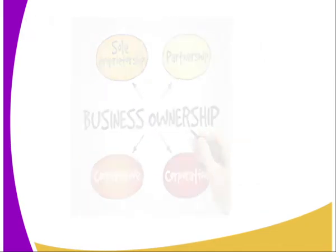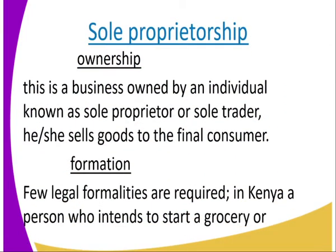We start with sole proprietorship. First, we look at ownership. This is the business owned by an individual who is referred to as the sole proprietor or the sole trader. He sells goods to the final consumer, dealing with the consumer directly. It is owned by one person, or even a family can own a sole proprietorship business.